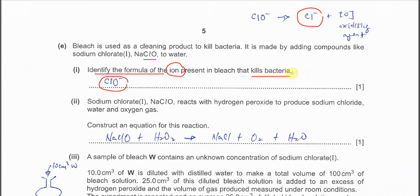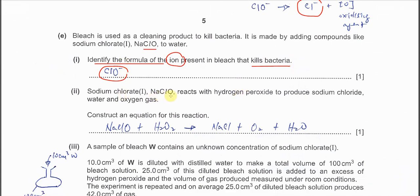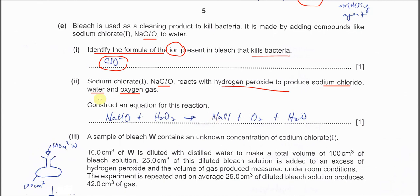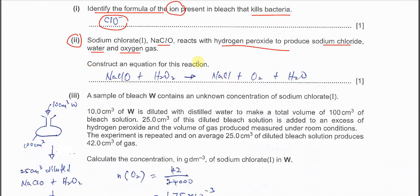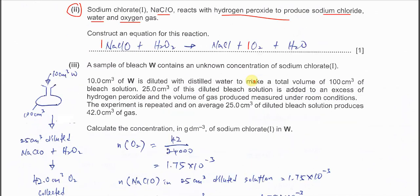Part E2: sodium chlorate(I), NaClO, reacts with hydrogen peroxide to produce sodium chloride, water, and oxygen. This is very easy because all the products are given, so you just put the reactants and products according to the equation. Why is this so easy? Because this part you're going to use for the later part, part 3. If this part is wrong, it will affect the later part. What you need to really understand and know is the ratio between the sodium chlorate(I) and oxygen is 1 to 1 ratio.